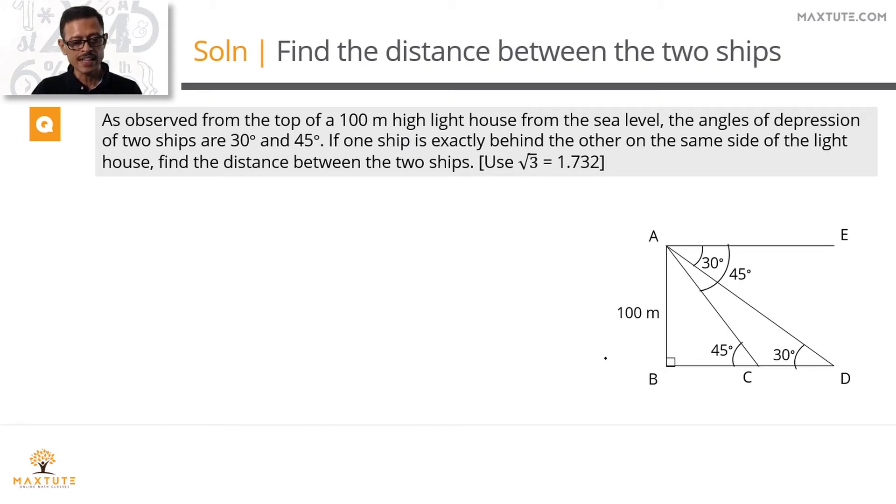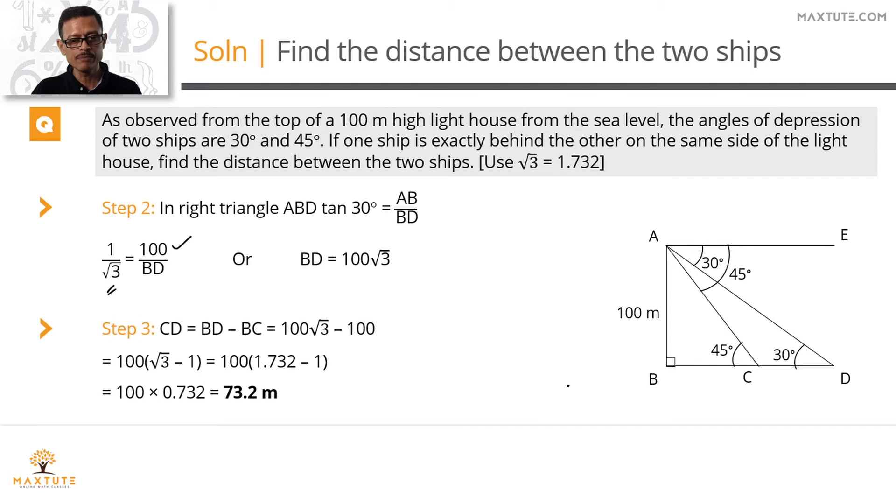Step two, in triangle ABD, apply tan 30 equals AB by BD. AB is 100, tan 30 equals 1 by root 3, so BD equals 100 root 3. CD is BD minus BC, which works out to 73.2 meters.